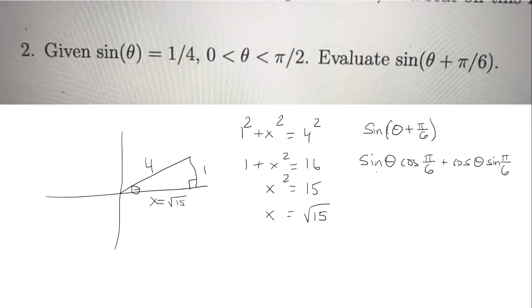Okay now sine theta we're given it's 1/4, cosine of π/6 is √3/2. Cosine theta we're not given but we can use the right triangle here. We know that cosine is adjacent over hypotenuse. So that's going to be √15/4.